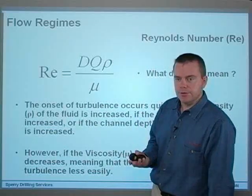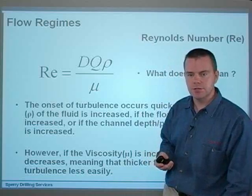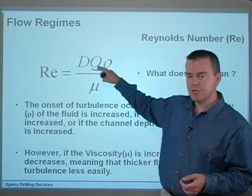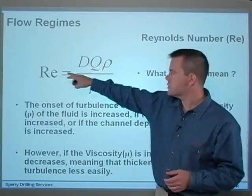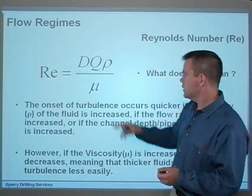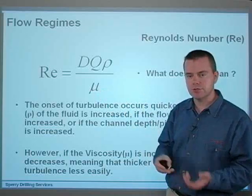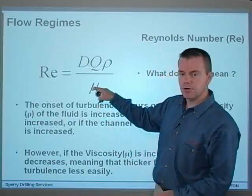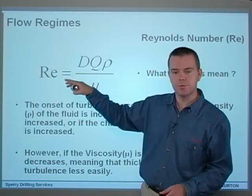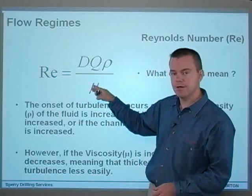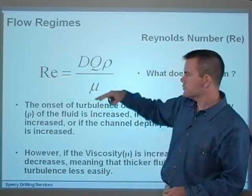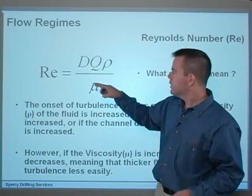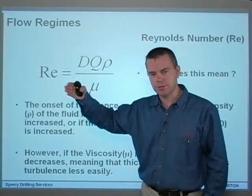The onset of turbulence occurs quicker if the density of the fluid is increased, the flow rate is increased, or the channel depth or pipe diameter is increased — obviously, these are all on the top of the equation. If the viscosity is increased — mu on the bottom — then the Reynolds number decreases, meaning thicker fluids tend towards turbulence less easily. There is a critical Reynolds number that has to be passed for the onset of turbulence to occur, and if you can bring the Reynolds number down by increasing viscosity, it won't go into turbulent flow.